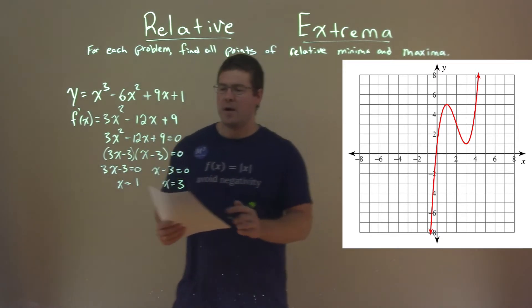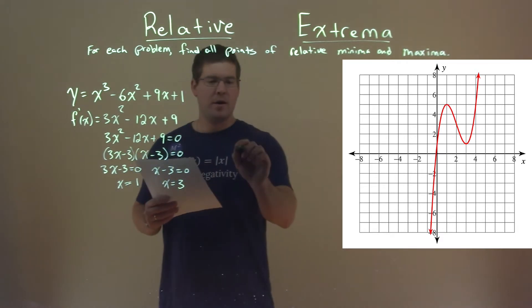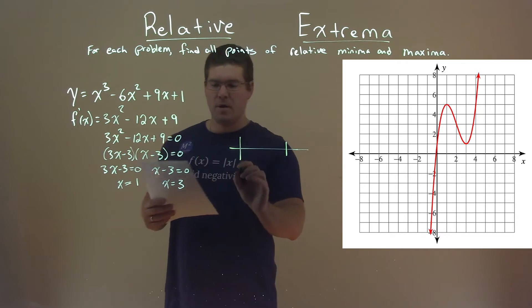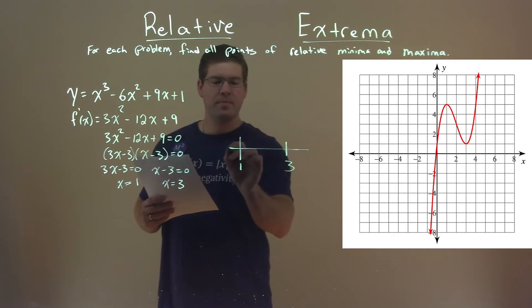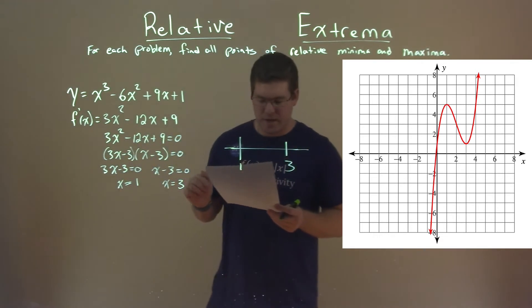And so now we have our critical points. We have to do our first derivative test here at 1 and 3. We make our lovely little chart. Put values 1 and 3 here, and we're going to plug values into our derivative and see if they're positive or negative.